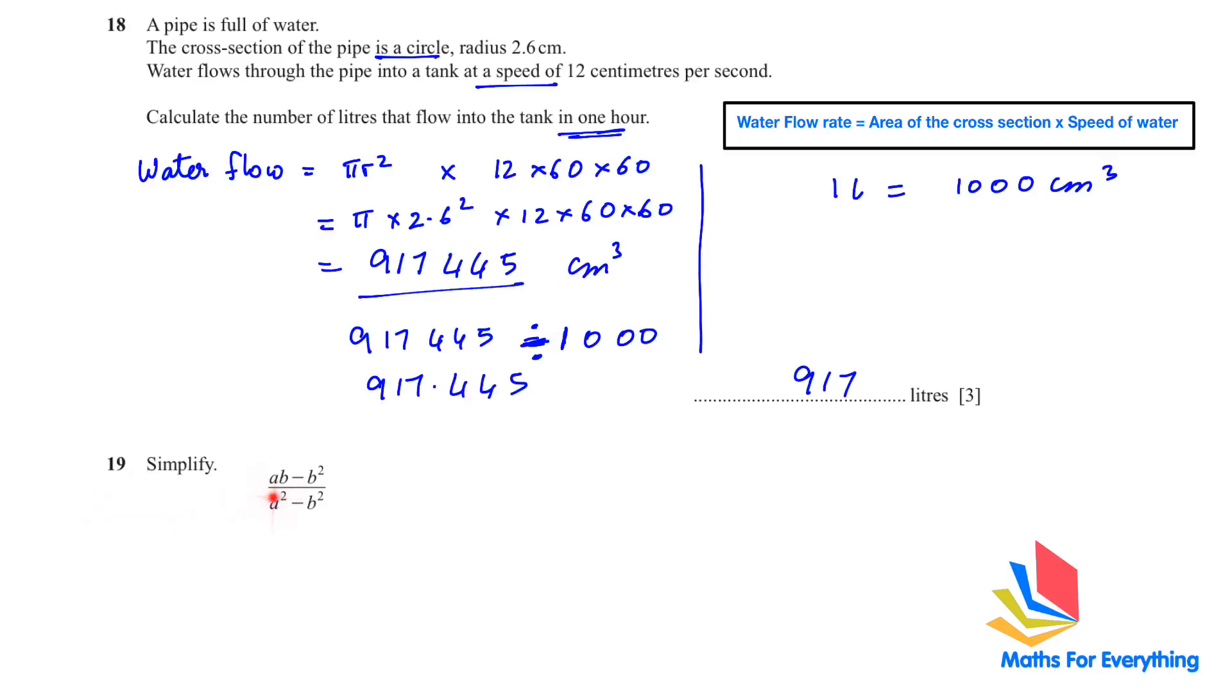Question 19: Simplify (AB - B^2)/(A^2 - B^2). You need to know the difference of squares rule. If you have A^2 minus B^2, it equals (A - B)(A + B). The numerator, B is common, so we factorize it out and we're left with A minus B. In the denominator, we use the difference of squares rule. The A minus B cancels and you're left with B over A plus B.